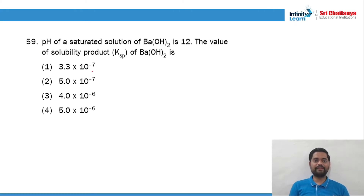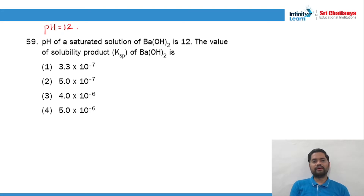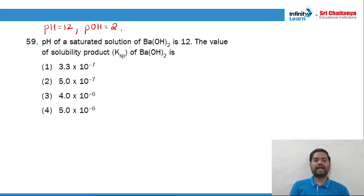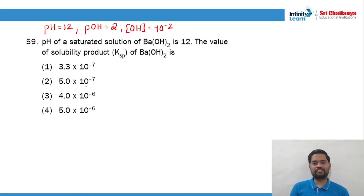Question 59: the pH of a saturated solution of barium hydroxide is given as 12. From this, pOH = 14 − 12 = 2, and the concentration of OH⁻ is equal to 10⁻². These are the things that are now known.